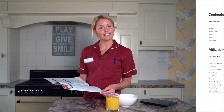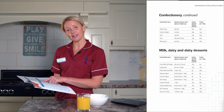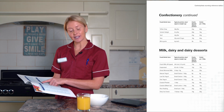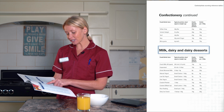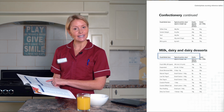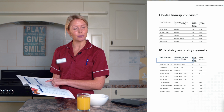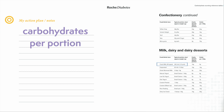Secondly, let's take a look at the milk. Milk is listed underneath the category of milk, dairy and dairy desserts. As you can see here, milk is listed and calculated per portion of 200ml, and it calculates at 9.6g of carbohydrates.